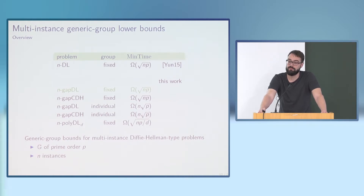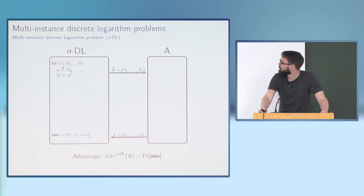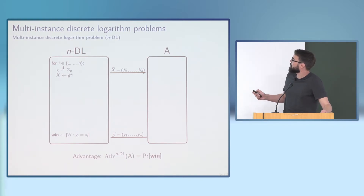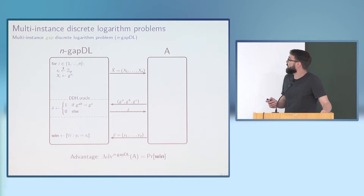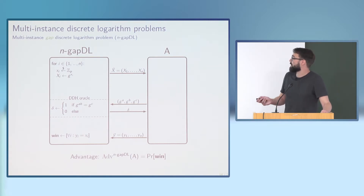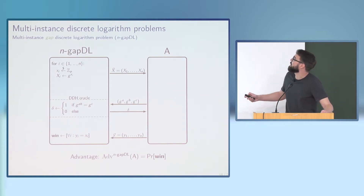Let's look at the gap d-log bound in detail. In the multi-instance d-log problem we consider a fixed group: we sample n group elements uniformly at random, and the adversary must output the discrete logarithm of all of them. In the gap setting we additionally give the adversary access to a decisional Diffie-Hellman oracle—it can query g^a, g^b, g^c and the oracle tells whether this triple defines a Diffie-Hellman tuple with respect to the generator g.